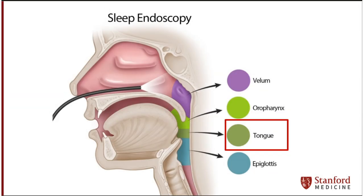Subsequently, the scope is passed to observe the tongue base and epiglottis. All observed findings are recorded and noted.